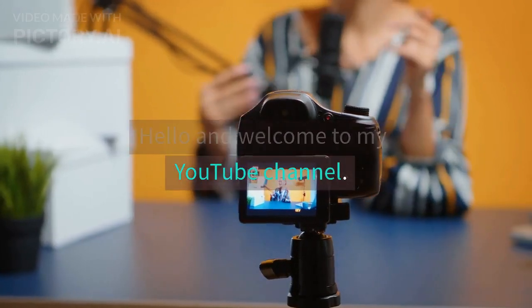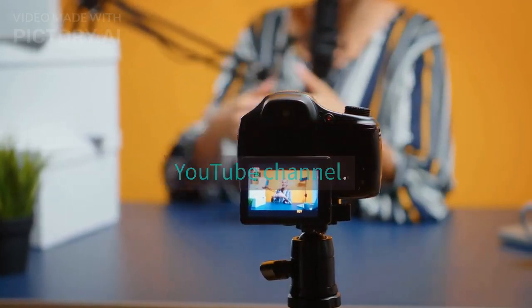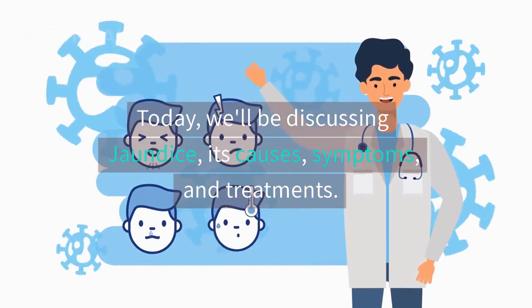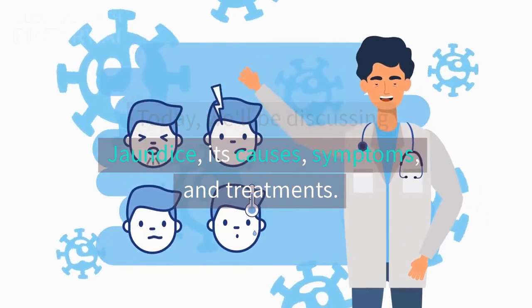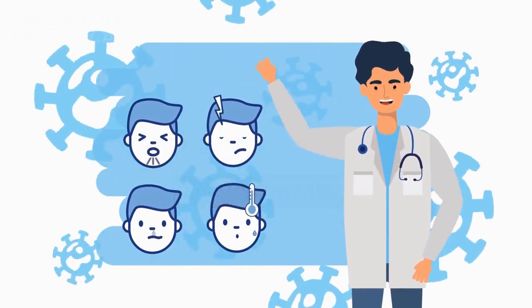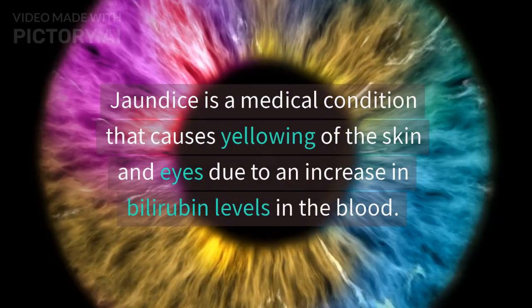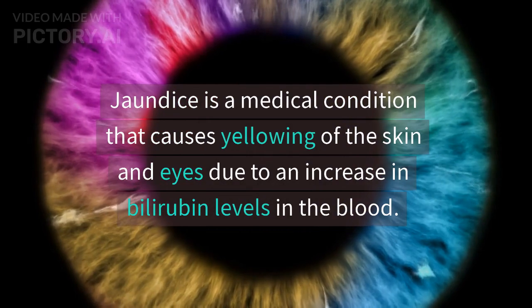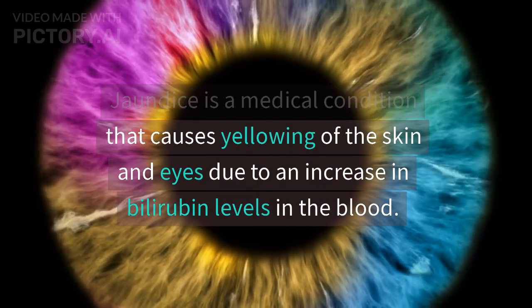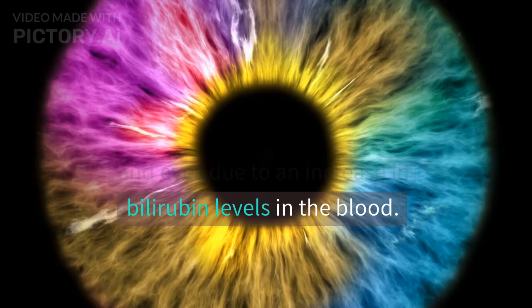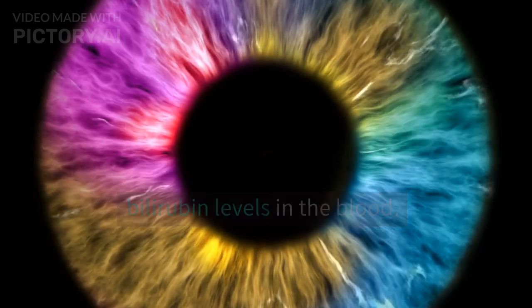Hello and welcome to my YouTube channel. Today we will discuss jaundice — its causes, symptoms, and treatments. Jaundice is a medical condition that causes yellowing of the skin and eyes due to an increase in bilirubin levels in the blood.